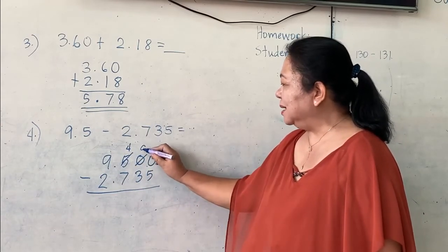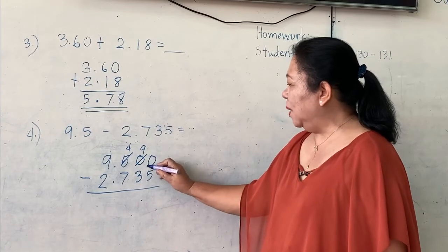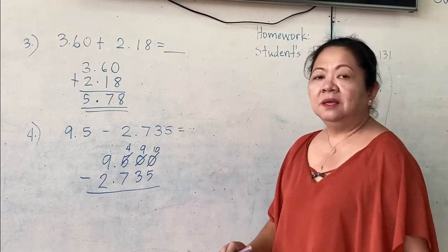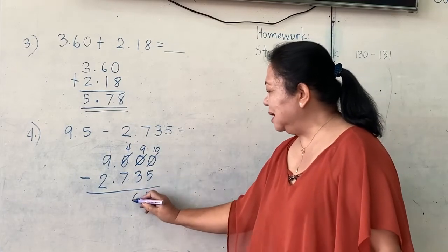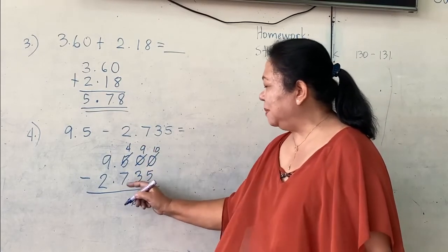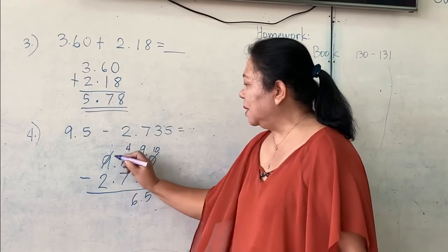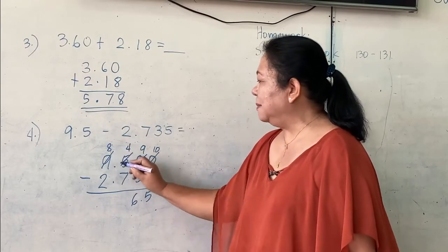So, 10 minus 1 is 9. And give 1 here. And this becomes 10. 10 minus 5 is 5. 9 minus 3 is 6. 4 minus 7 cannot. Borrow 1 from 9.